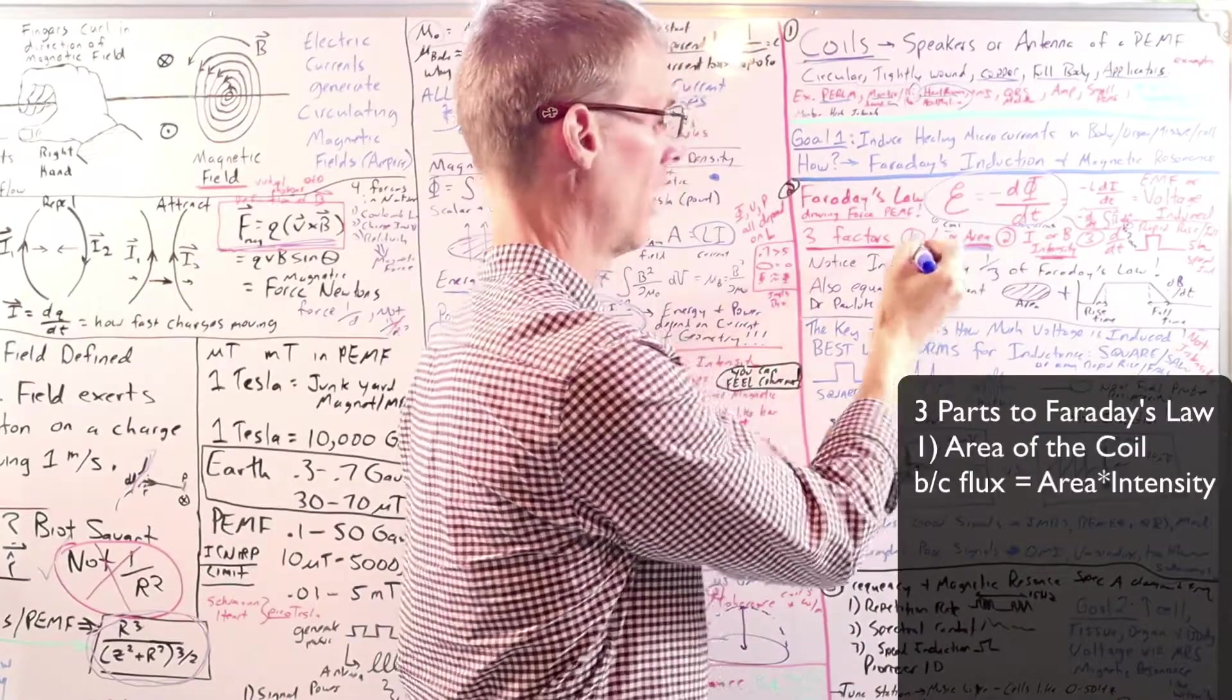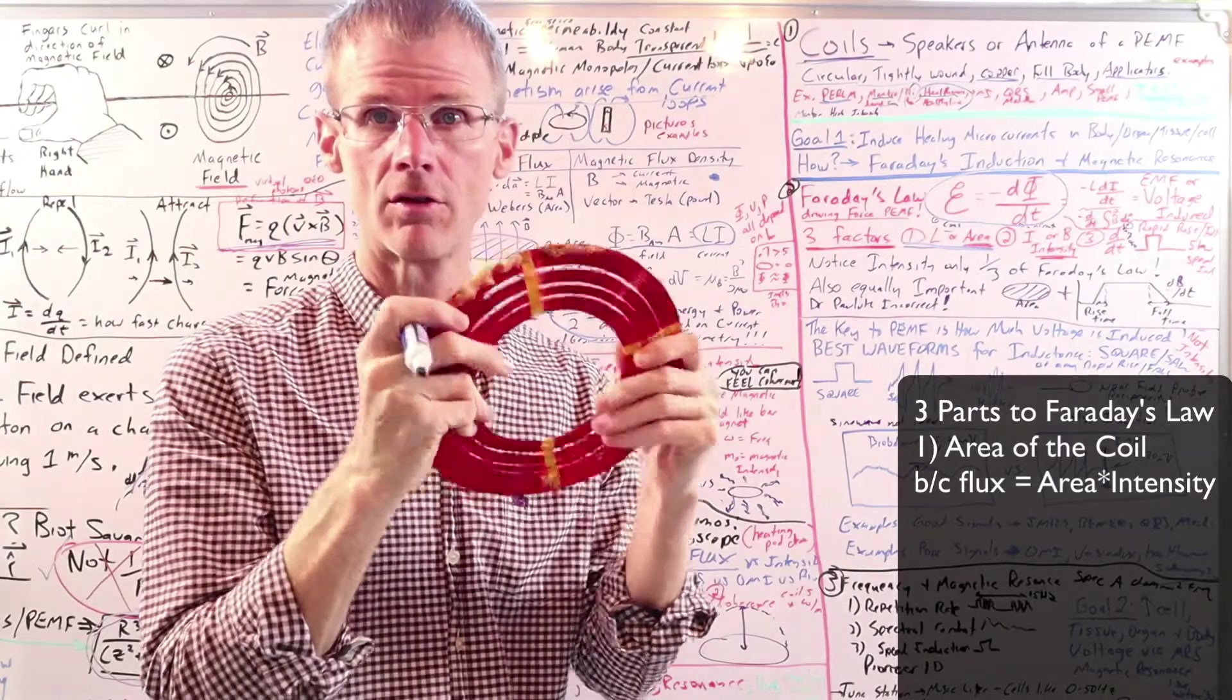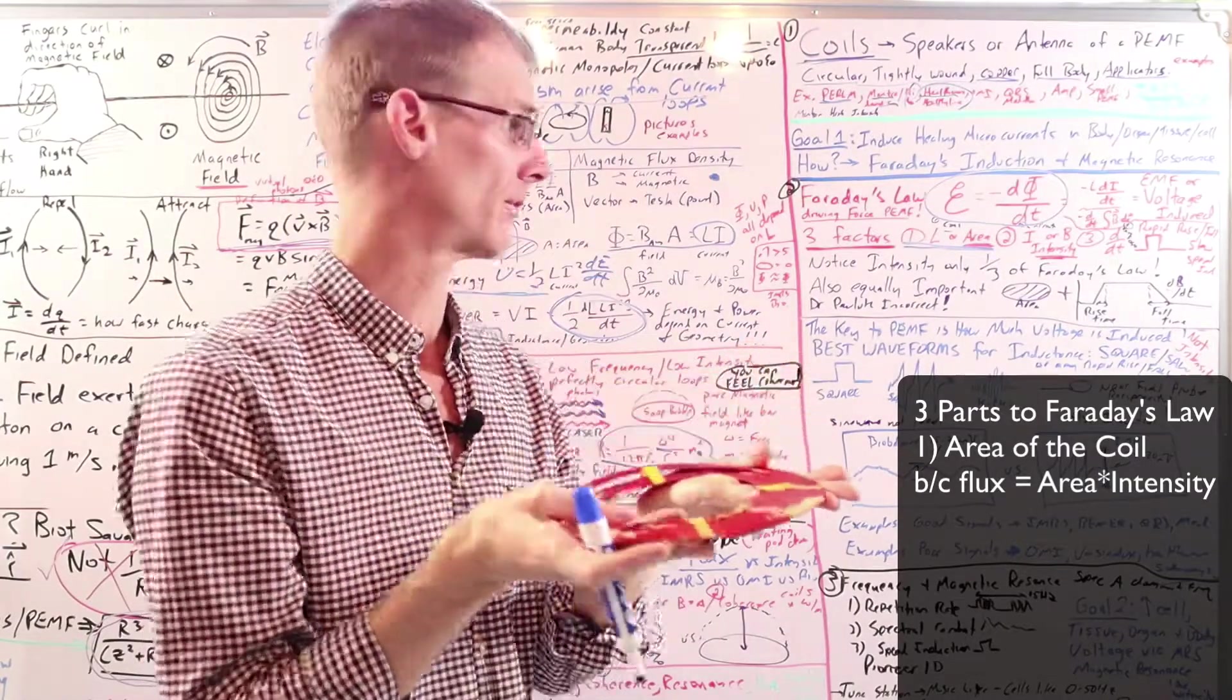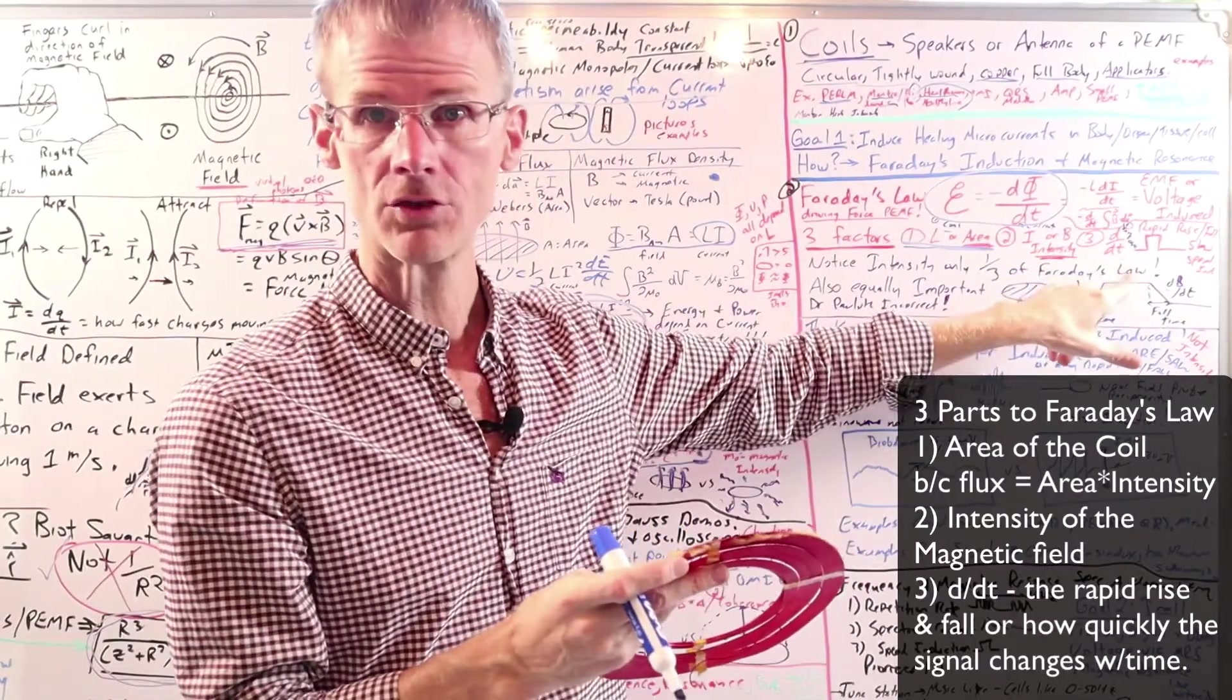The first is the area of the coil, because again, flux is magnetic field times area. So we gotta look at the area of the coil, because along with intensity, that'll tell you how much flux there is. And of course intensity is one third of it, but only one third, and how quickly the signal changes.